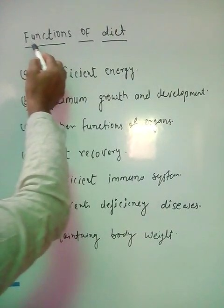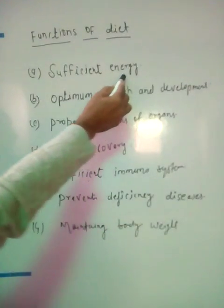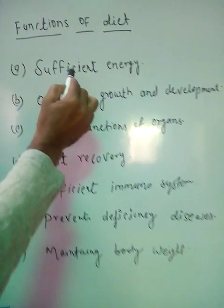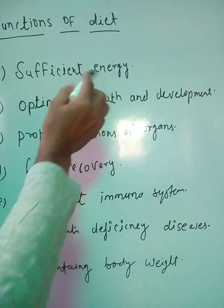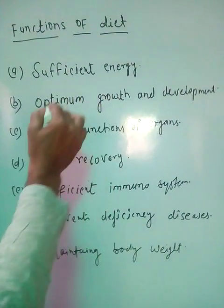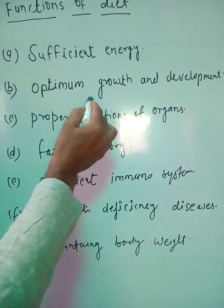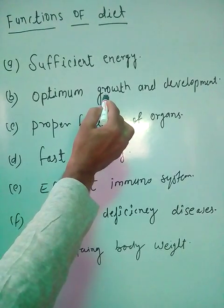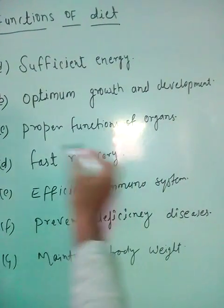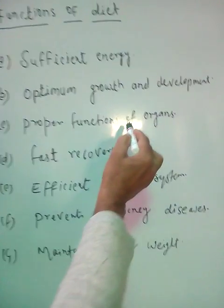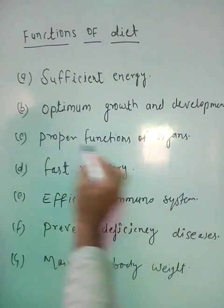Now we'll talk about the functions of balanced diet. First, it provides sufficient energy for the various activities of the individual. Second is optimum growth and development - a very important concept - meaning it helps the individual to grow and develop to the optimum level. Third is proper functioning of organs - balanced diet helps various organs and systems of the body to function properly.